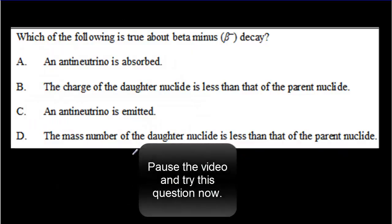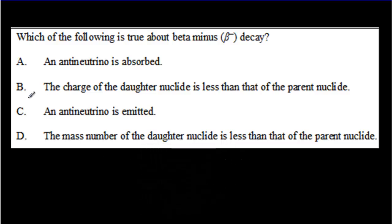So a quick IB question. Read it over, try it out, and then come back for the answer. Hopefully you said the correct answer is C. When you've got a regular beta decay, the regular type particle, then you do get the antineutrino. This answer B here, it's just going in the wrong direction. If they had said the charge of the daughter nucleus is more than the parent nucleus, that would be a true statement. But they said less, so that's a false statement.